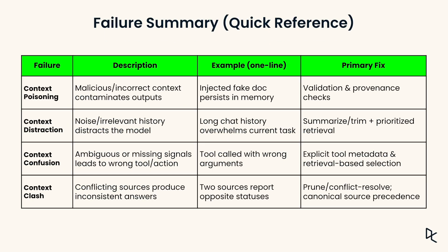Here's a quick summary. Context poisoning is bad inputs contaminating outputs — fix it with validation checks. Context distraction is noise that overwhelms the model — fix it with summarization and prioritized retrievals. Context confusion is vague inputs that lead to the wrong actions — fix it with explicit metadata and smarter selection. Context clash is contradictions that break consistency — fix it with conflict resolution and trusted sources.